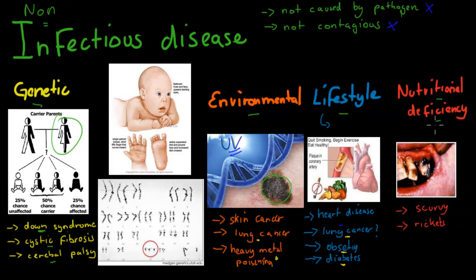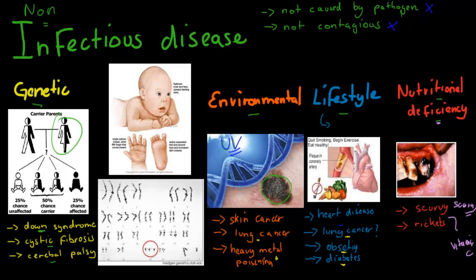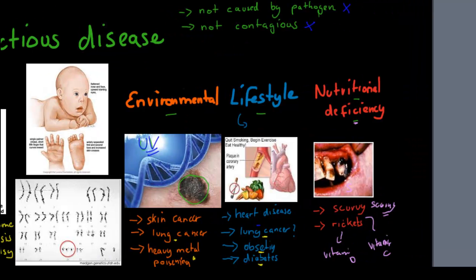The last category is nutritional deficiencies, which refers to lacking vitamins or minerals. Scurvy is a disease that used to affect many people, especially sailors, and it comes from vitamin C deficiency. If you don't get enough vitamin D, especially in children, you used to get rickets. These are examples of nutritional deficiency diseases — scurvy from vitamin C deficiency and rickets from vitamin D deficiency, respectively.